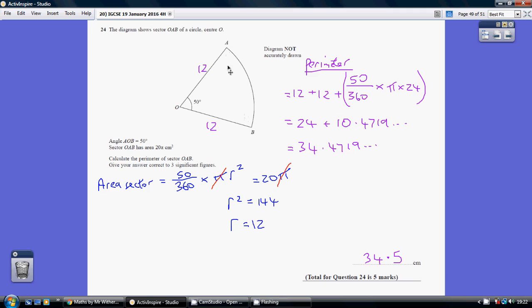So the total perimeter is 12 plus 12 plus this here, which is 34.4719 dot dot dot. So to three significant figures, that's 34.5 because we round the four up because of the seven.